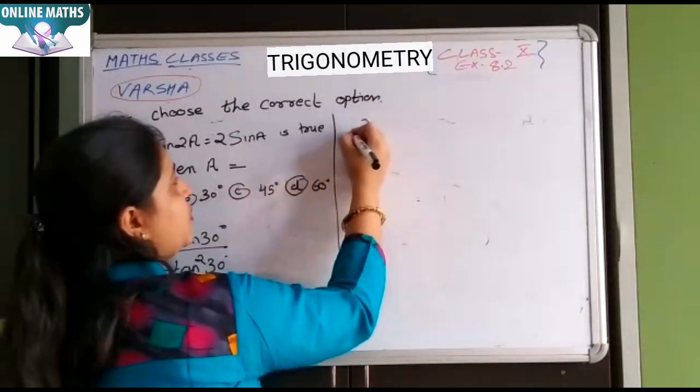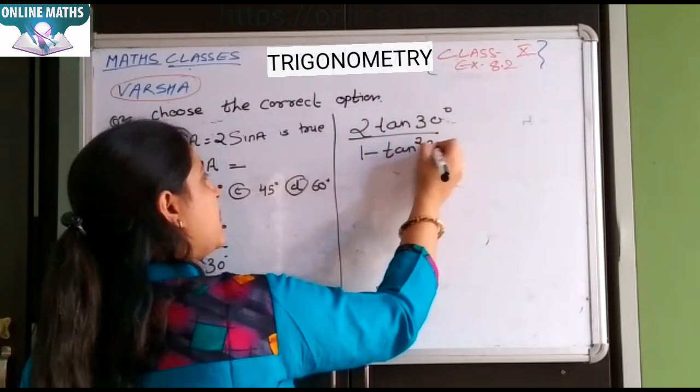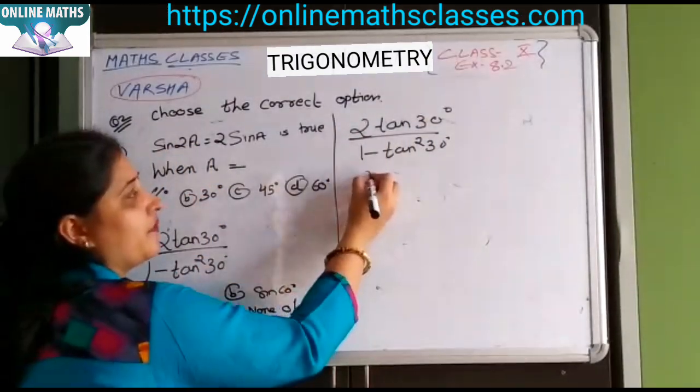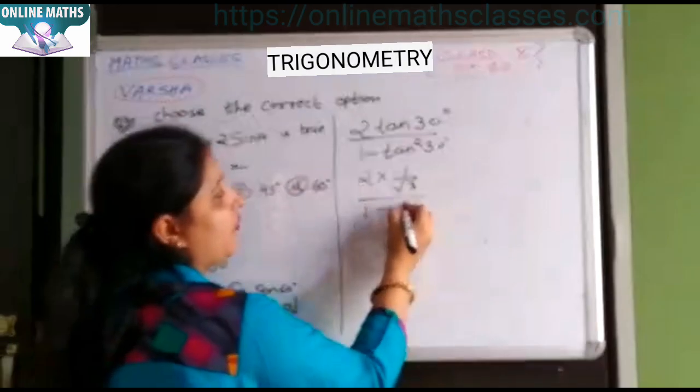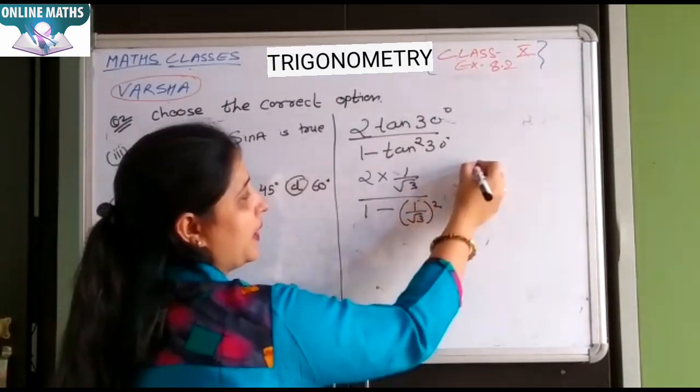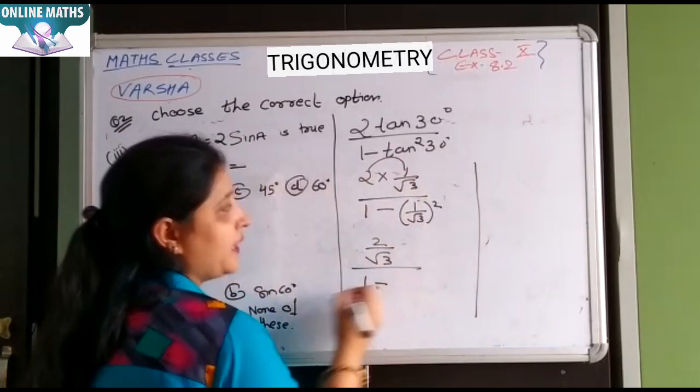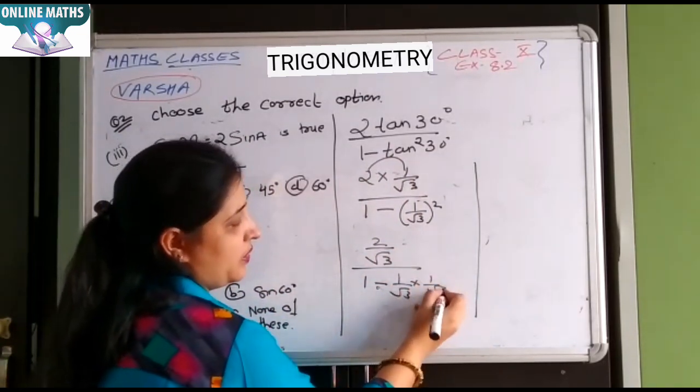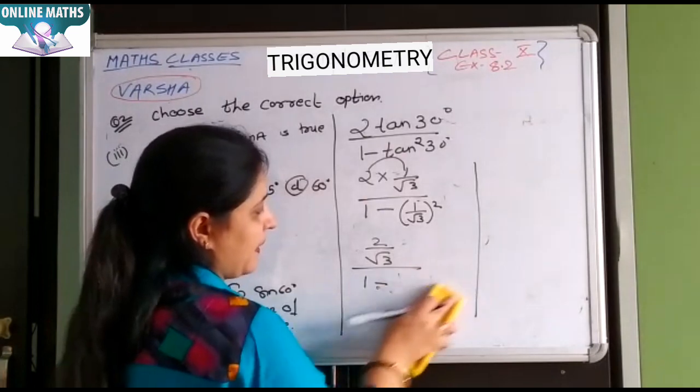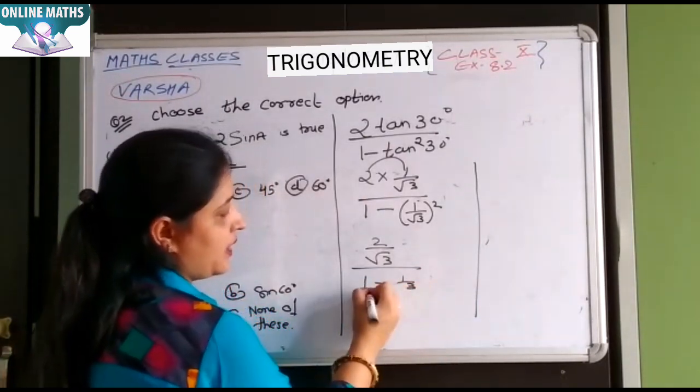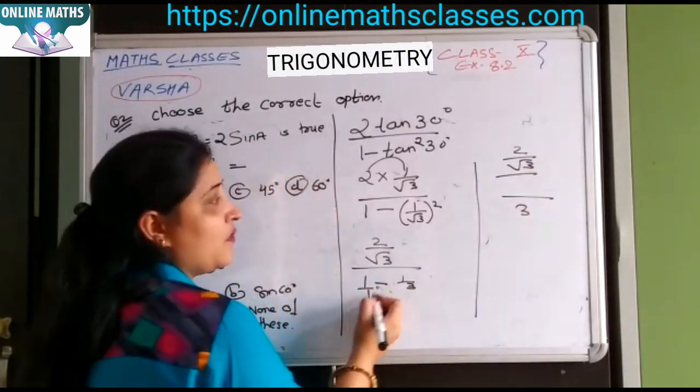Part 4. 2 tan 30 upon 1 minus tan² 30. Tan 30 value is 1 upon under root 3. 2 upon under root 3 upon 1 minus tan² 30. 1 upon under root 3 into 1 upon under root 3. 1 upon 3. Aap ne isko solve karna hai denominator ko.